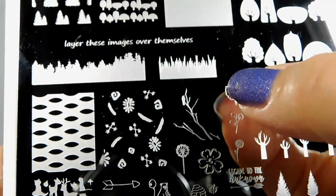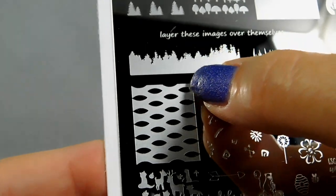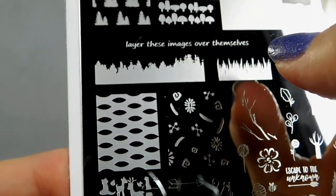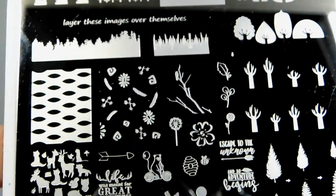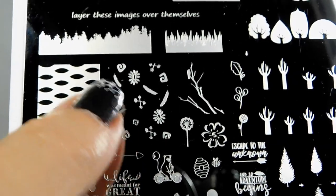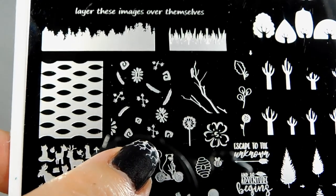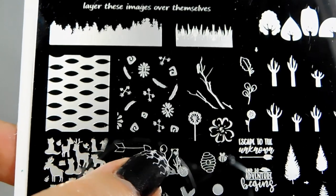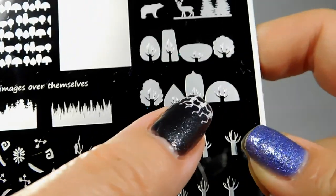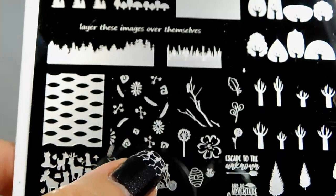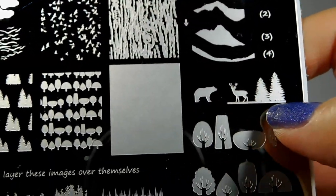Then there's the grass and the trees that you can stamp over other things to layer and make your own full nail background images. I would probably use this as a background image and stamp this in a lighter color, and then stamp other things like maybe these trees or the cute bear, the deer, that kind of stuff over it.